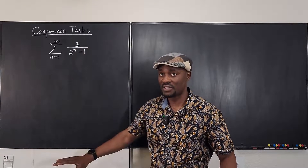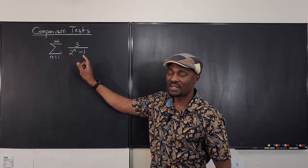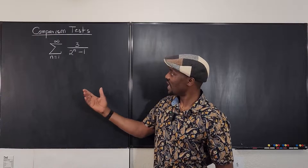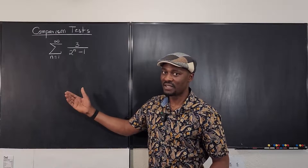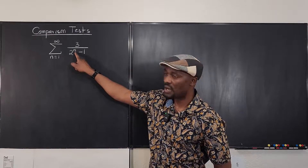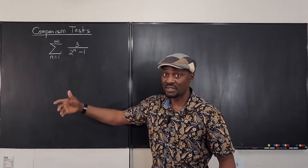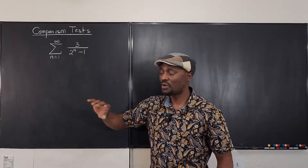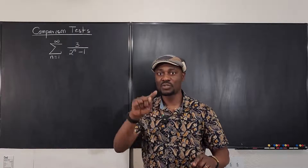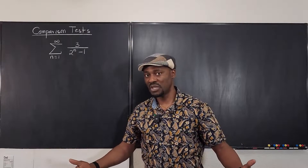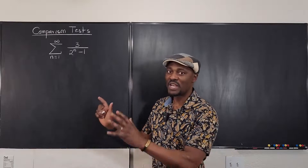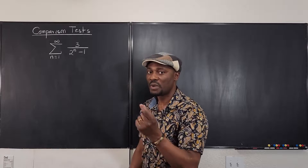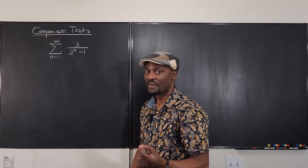Without the minus one, the common ratio would be one half, and you'd know it converges as a geometric series. But once you have something like this beside it, you can no longer treat it as a geometric series. Also, it is not a p-series because the power is not constant — for a p-series, the exponent is constant and the base is changing. Based on what we know, this is a modified version of a geometric series with a common ratio of one half.